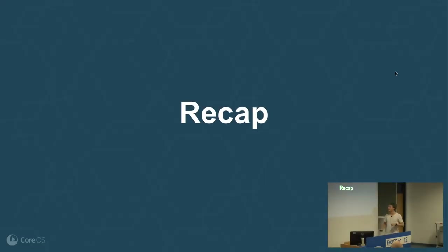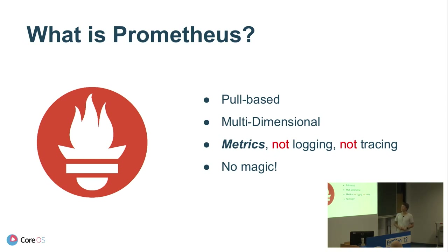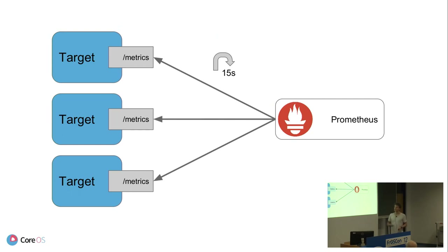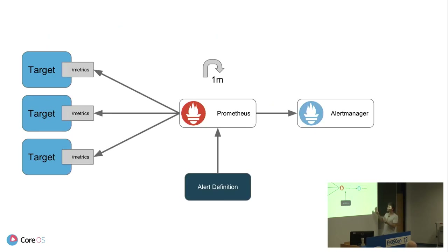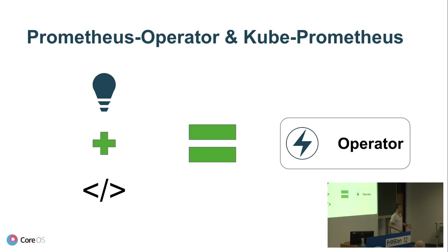Quick recap: Prometheus is a pull-based monitoring system — it believes in the church of pull. It's multidimensional, you can query the data very nicely. It's about metrics, not logging, not tracing, and especially no magic. It scrapes your targets every 15 seconds. You give it alert definitions and it sends alerts out to Alert Manager. We took all our knowledge, put it into code, gave it to the open-source community as an operator, and the community automated the entire cluster monitoring.